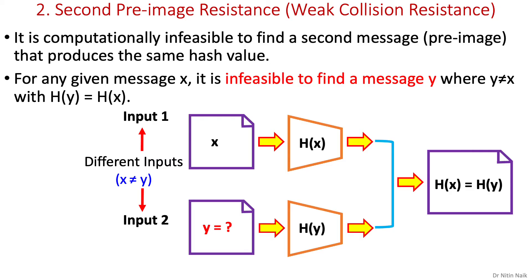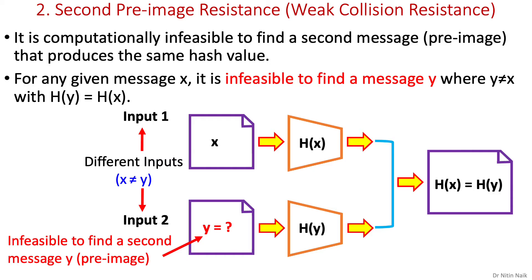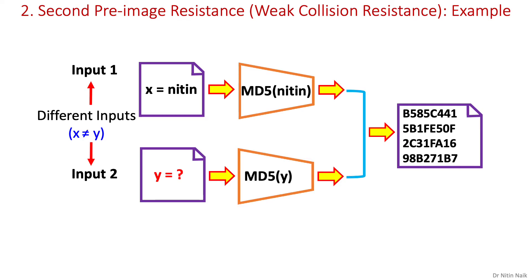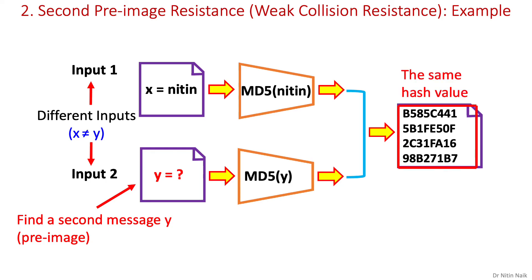The second pre-image resistance property states that it is computationally infeasible to find a second message or pre-image that produces the same hash value. It means that given one message, attackers cannot find a second message with the same hash value. If this is true for any hash function or algorithm, then that hash function is second pre-image resistant. Considering the same example, input is 'Nitin' and its hash value is shown in hexadecimal using MD5. For performing a second pre-image resistance attack on MD5, we need to find a second message which can generate the same hash value as shown here. If MD5 does not let us find a second message, then it is second pre-image resistant, otherwise it is not. To date, it is difficult.